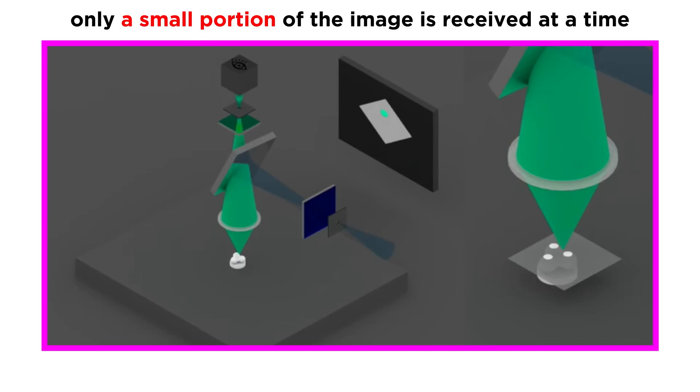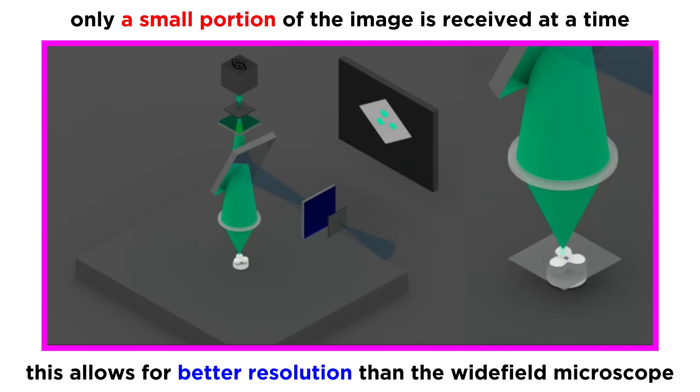Because of the function of the pinhole, the excitation photon scans across the sample, meaning that you only get a small part of the image at a time through the pinhole. This allows for better resolution compared to the wide field microscope, which allows scientists to look at thicker samples because of the low levels of background fluorescence.